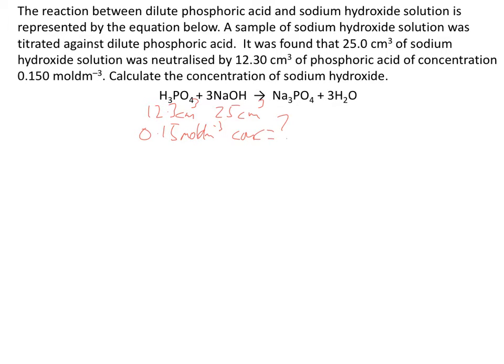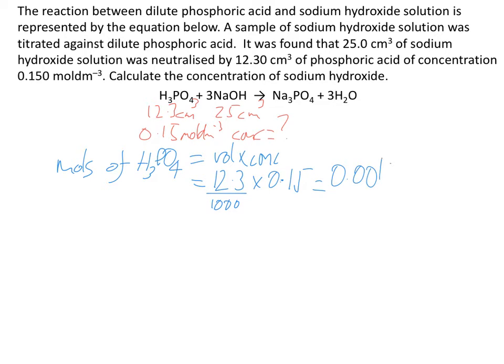You've got 12.3 cm³ of phosphoric acid, and you know that the concentration of phosphoric acid is 0.15 moles per dm³. The question asked us for the concentration of sodium hydroxide. The first thing we do on questions like this is work out the moles. We're going to work out the moles of phosphoric acid, H3PO4. To work out the moles of a solution, we use the formula volume times concentration. So volume is 12.3, and we divide by 1,000 because we're converting cm³ into dm³, then times it by the concentration, which comes to 0.001845.